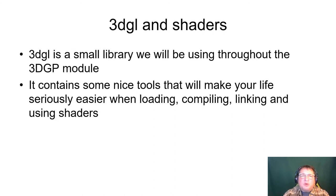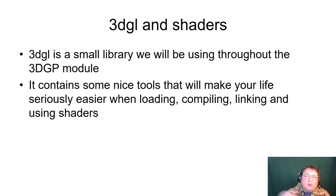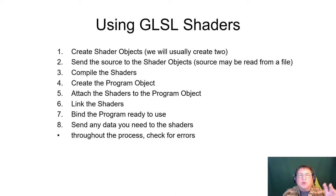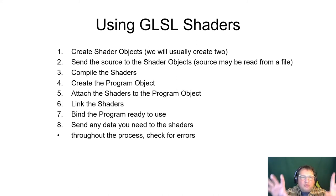You will be using in this module a library created specifically for it — its name is 3DGL. It's quite small but contains nice tools that make your life seriously easier when loading, compiling, linking, and using shaders. The process of using shaders is quite complex — it involves eight steps altogether. You first have to create shader objects. We will usually create two: one vertex shader and one fragment shader.